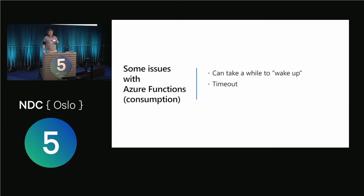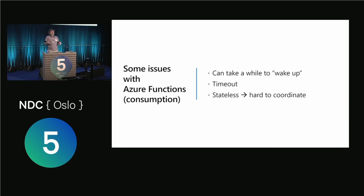Another thing is timeout. Functions, after a while, give up. So if you have a long-running operation — and this timeout in consumption mode is between 5 and 10 minutes — if you take another plan like the premium plan, it can go up to half an hour. But if you have operations which take longer than that, at some point the function is going to give up. Also, functions are essentially stateless — you never know what machine they're going to run on. You can't take advantage of local files. Also, if a function has an error, that can be tricky to handle, especially if you want to run multiple functions in a chain and one of them has an error — it's kind of hard to notify the next one. That is a little bit tricky to coordinate.